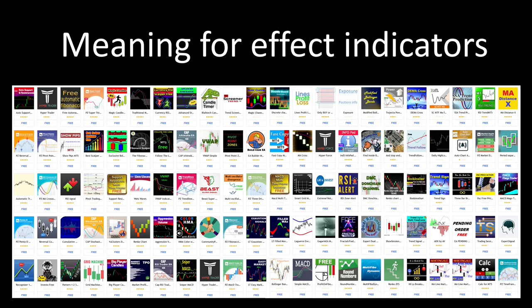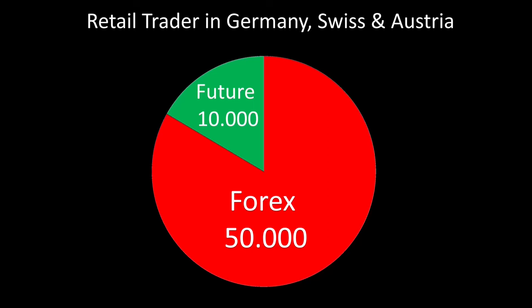There are around 60,000 retail traders in Germany, Switzerland and Austria, 50,000 of whom trade in the forex market. Since the candle is the fastest indicator in the forex market, it can be assumed that these 50,000 forex traders also work with candles. There are big differences in the field of candles.